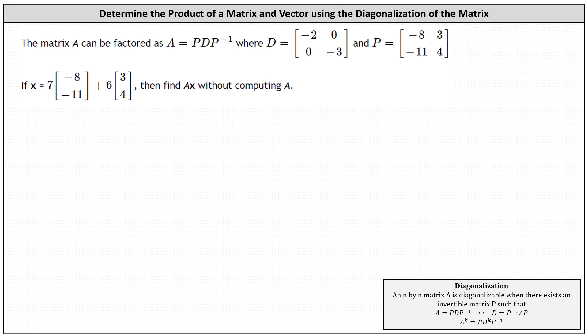The matrix A can be factored as A equals P times D times P inverse, which indicates matrix A is diagonalizable given matrix D and P. If vector X is seven times the vector negative 8, negative 11, plus six times the vector 3, 4, we're asked to find matrix A times vector X without computing matrix A.